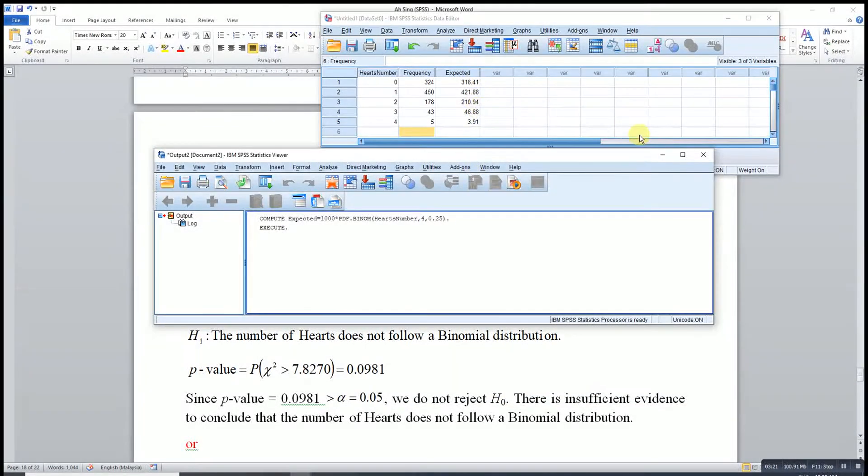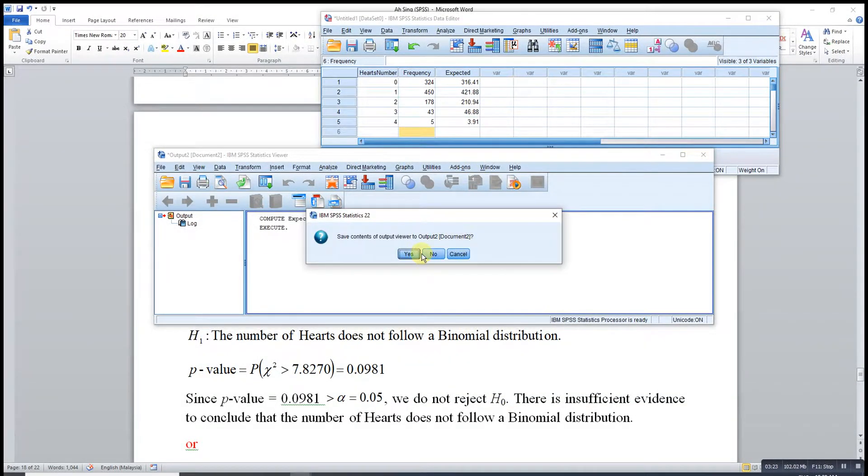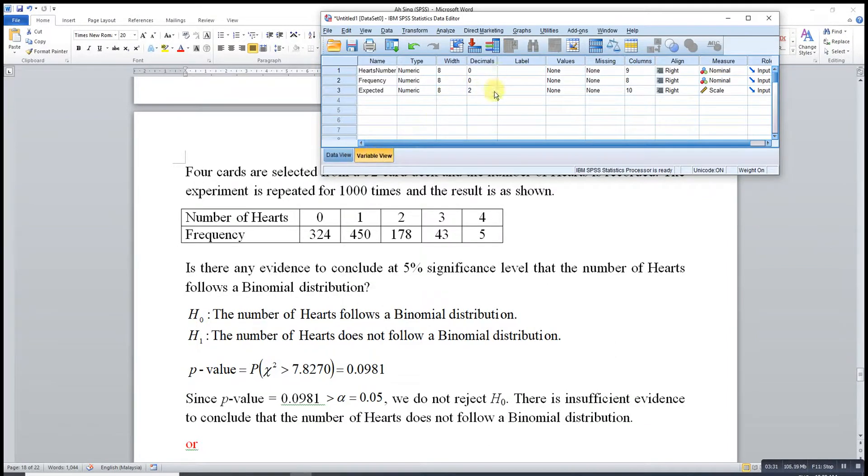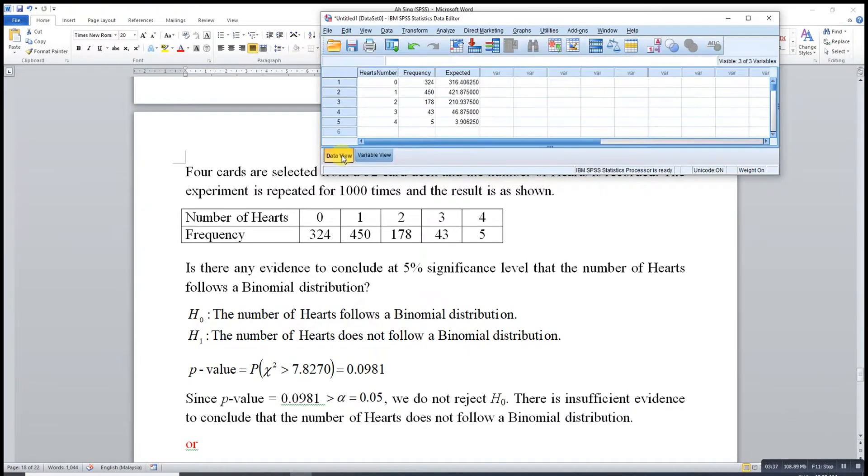The expected number is already computed. Let's increase the decimal places to increase the accuracy. Go to variable view, then decimals. We can increase to 6 decimal places.